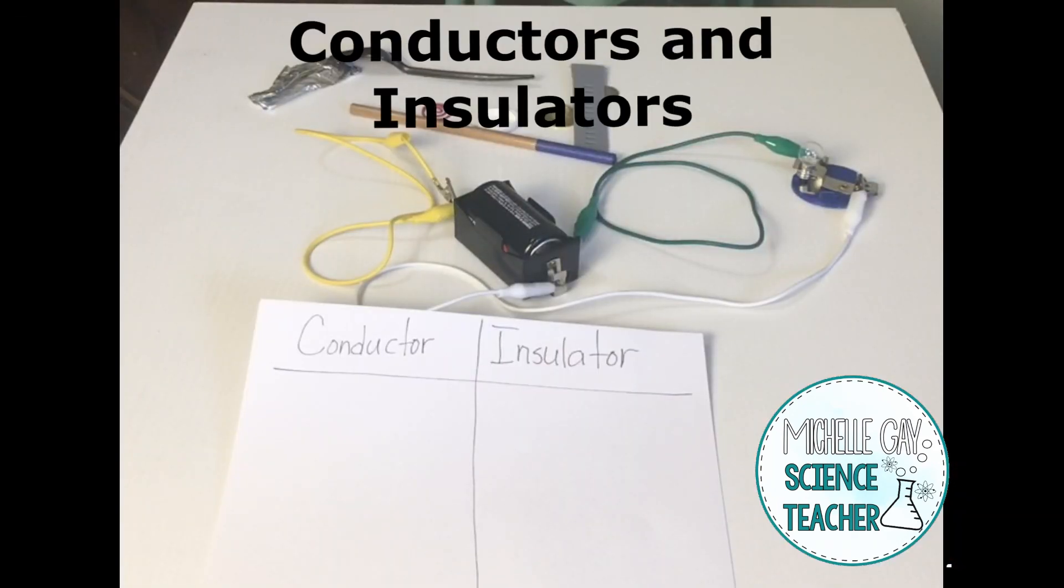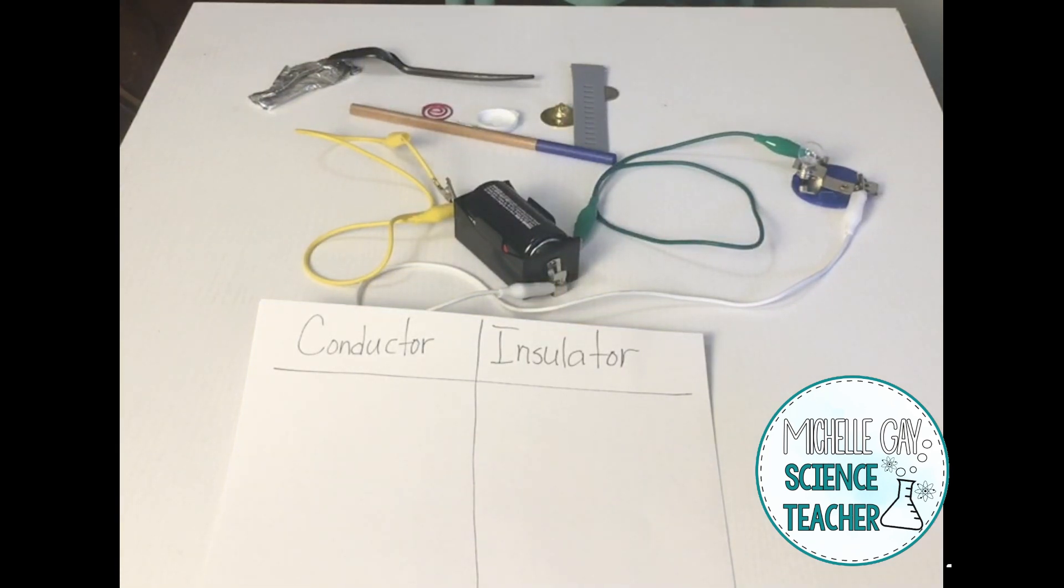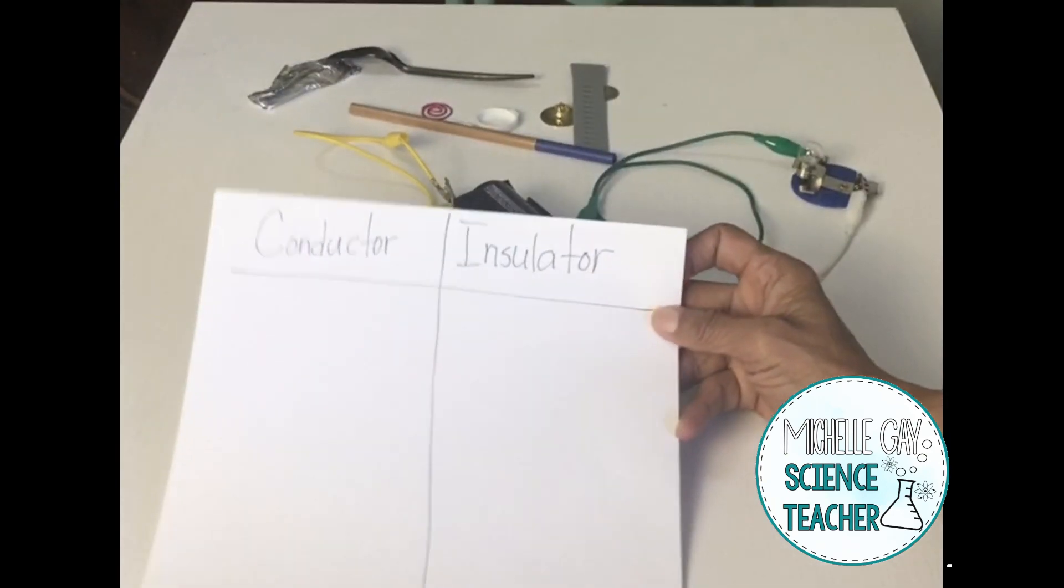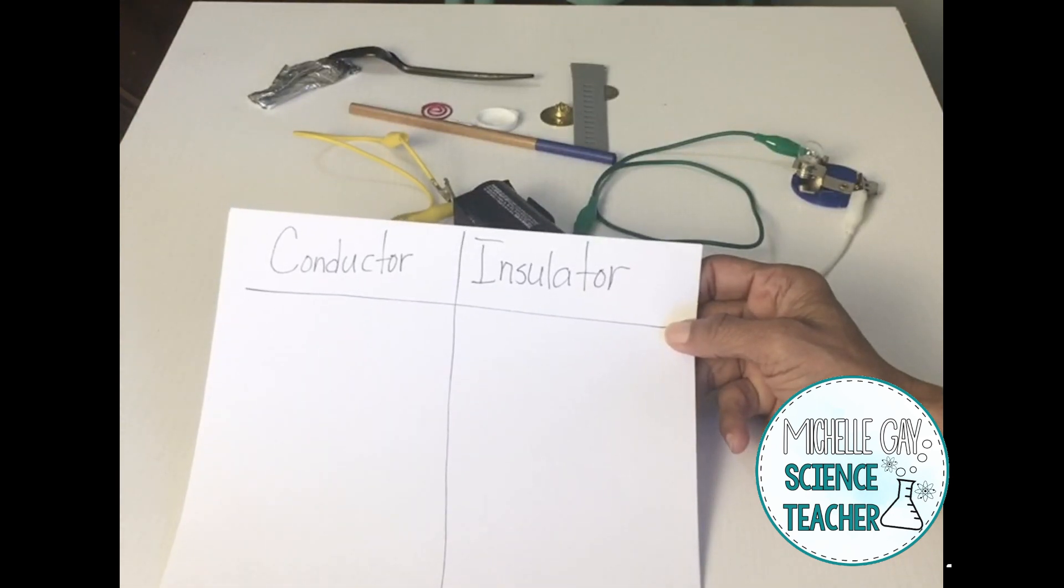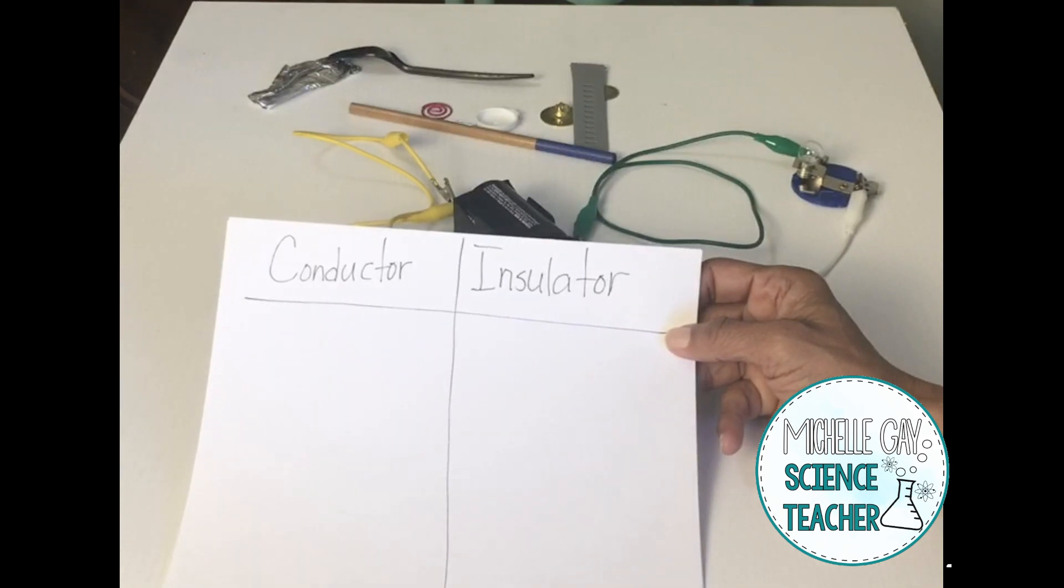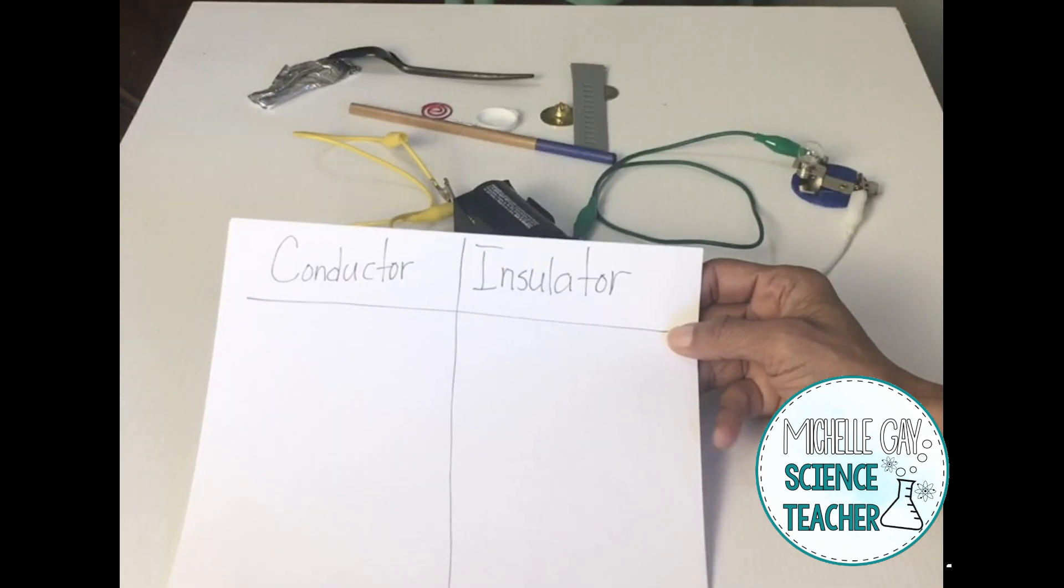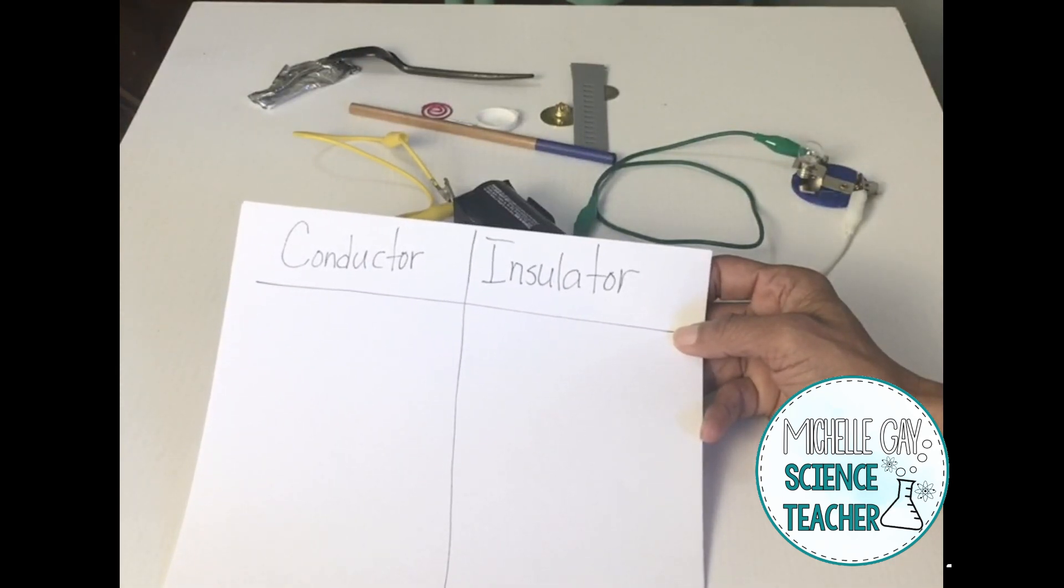Now, we're going to test conductors and insulators. I want you to make a chart like mine. Put on one side conductor and the other side insulator. You're going to make a prediction of the items you're going to test using your simple circuit. Remember, a conductor will allow the charge to flow and will have current electricity. So the light bulb will come on. An insulator will stop the charge from flowing and the light bulb will not come on.